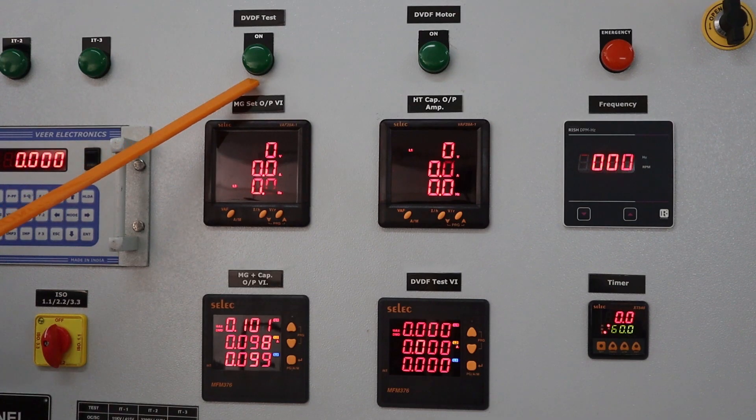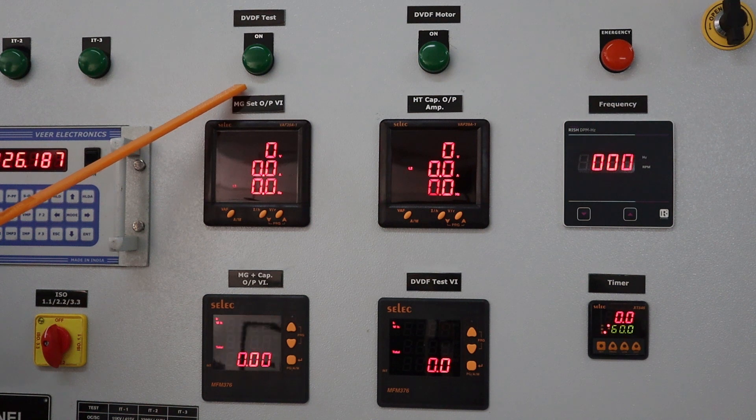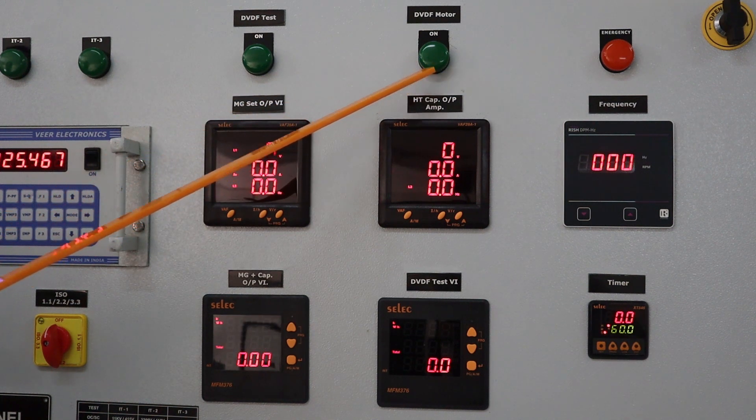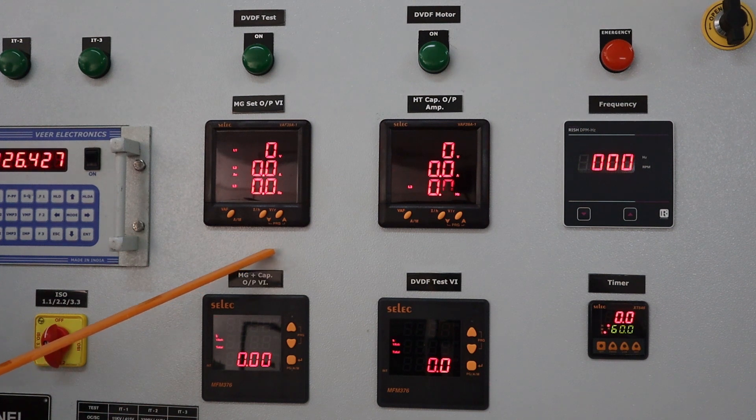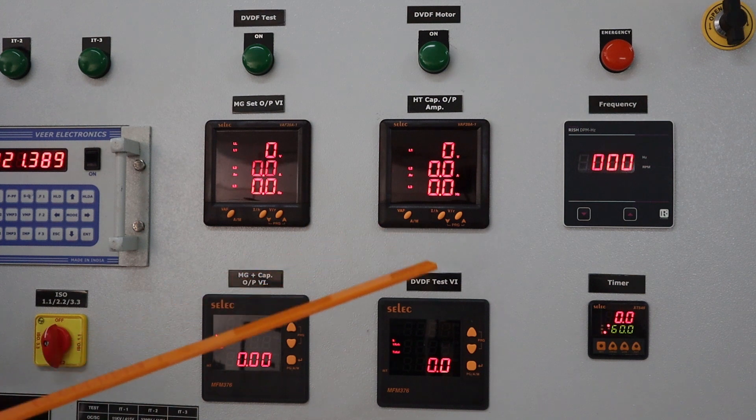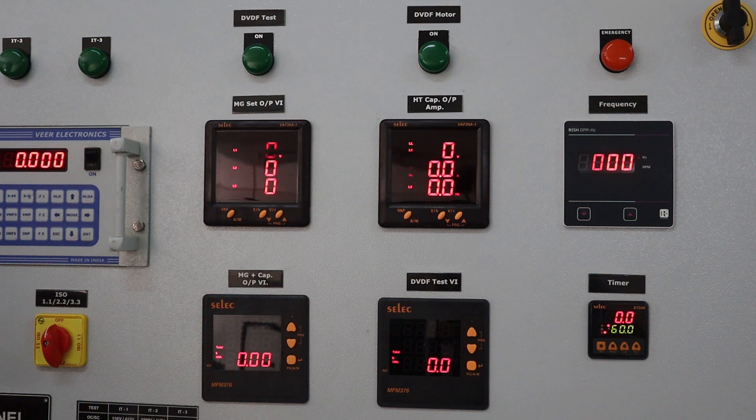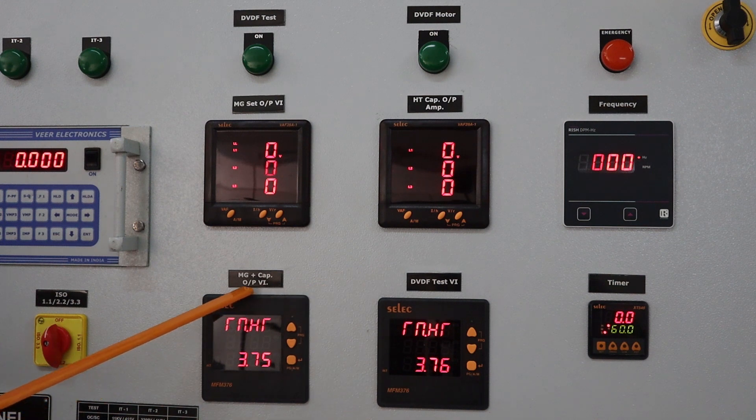This is DBDF test on off indication lamp. This is DBDF motor on off indication lamp. This is VIF meter for DBDF MG set output. This is ampere meter for DBDF capacitor bank output. This is combined ampere meter for DBDF MG set output and DBDF capacitor bank output.